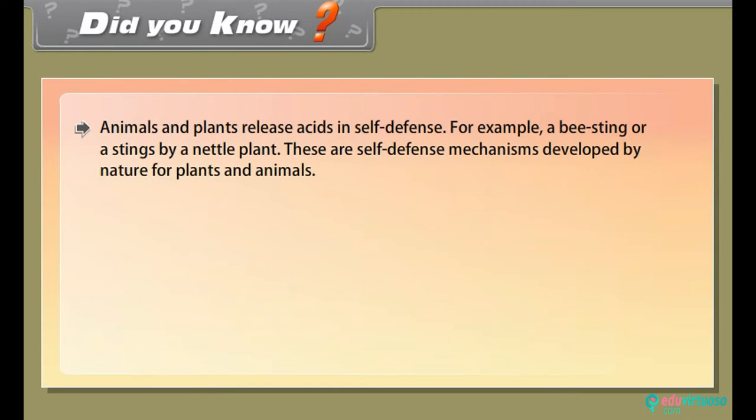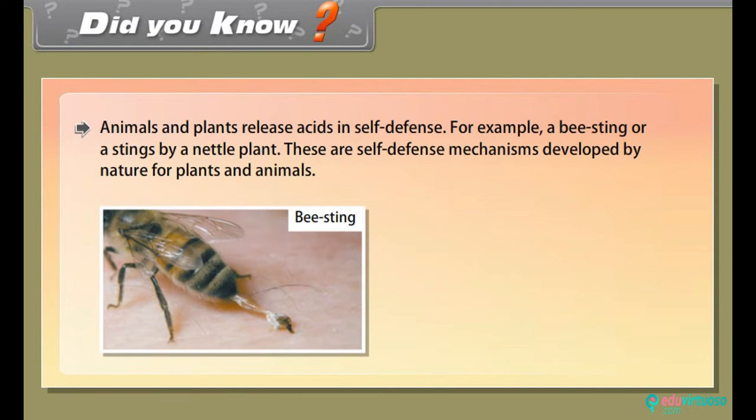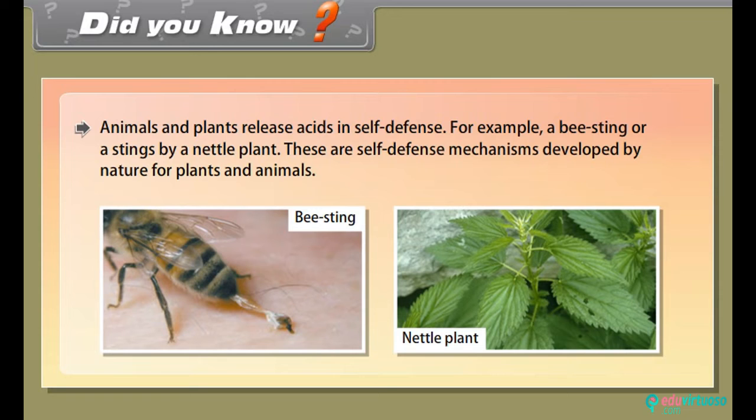Did you know? Animals and plants release acids in self-defense, for example, a bee sting or stings by a nettle plant. These are self-defense mechanisms developed by nature for plants and animals.